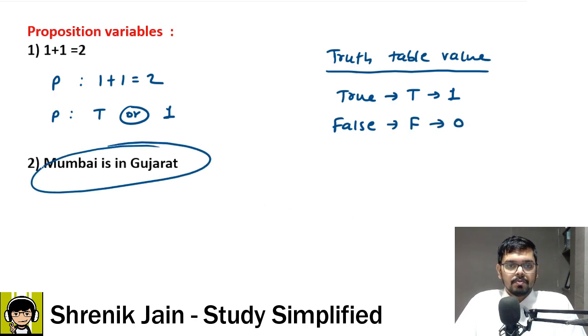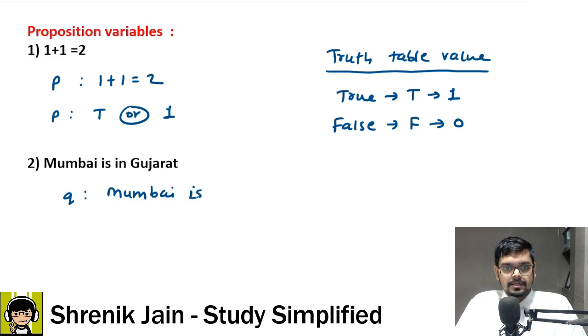See, example 2. Mumbai is in Gujarat. Let me assign q variable to it. So, q variable is Mumbai is in Gujarat. So, this q is nothing but now proposition variable. It can be anything, r, s, t, any variable you can take. And here, the nature of q is what? The nature of q is F because it is false. Mumbai is not in Gujarat. Or you may say it as 0.